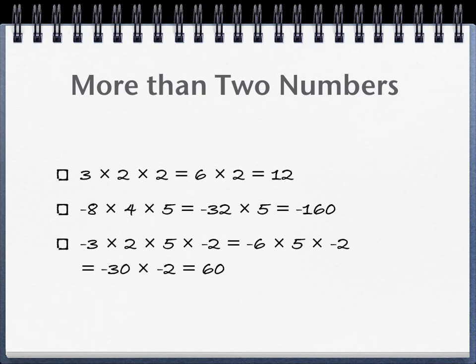Finally, here's one with 4. We have negative 3 times 2 times 5 times negative 2. So the same thing. You're going to multiply negative 3 times 2. Those are different signs, so you'll get a negative number. So now you have negative 6 times 5 times negative 2.